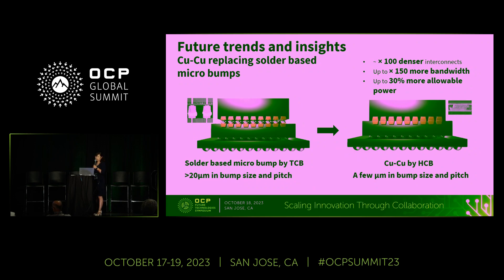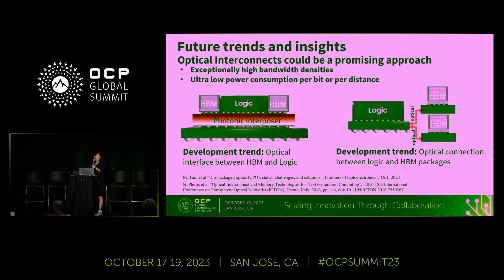In terms of interconnects, we currently provide solder-based microbumps via thermocompressive bonding for bond pitches larger than 20 microns. In the future, with customer engagement already underway, we can provide copper-to-copper bonds through hybrid copper bonding, which achieves just a few microns in bump size and pitch. This enables more than 100× denser interconnects, up to 150% more bandwidth, and 30% more allowable power due to thermal advantages.